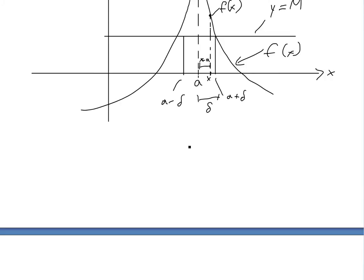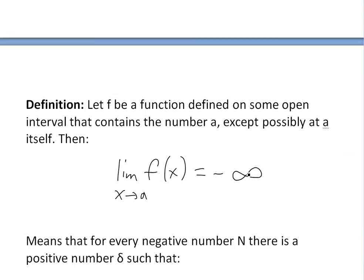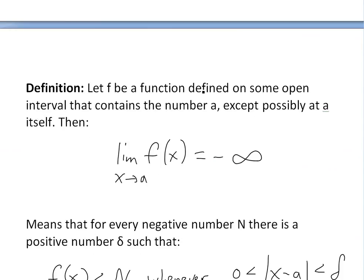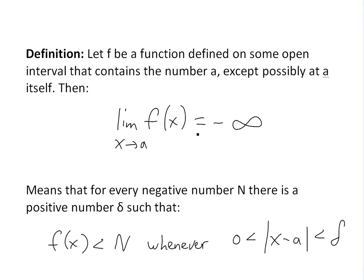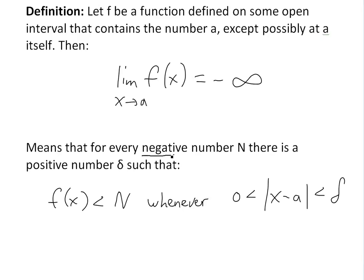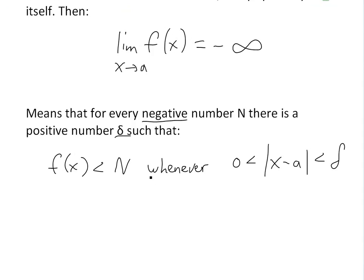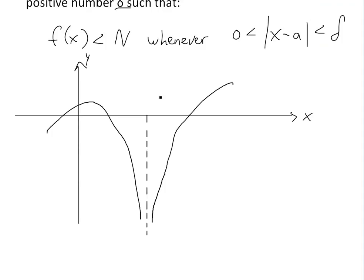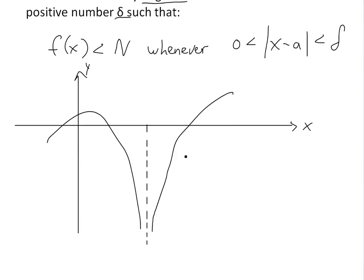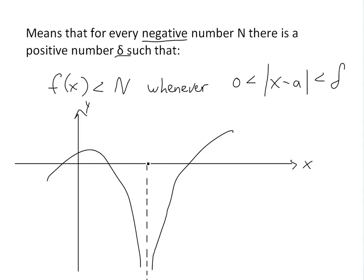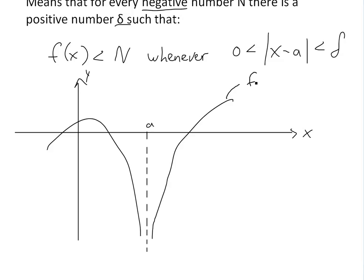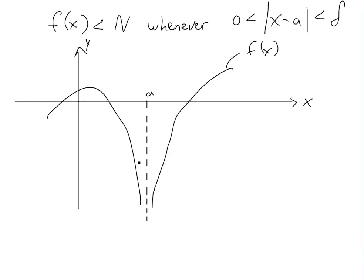That was the positive infinite limit. Now let's look at the negative one — it's going to be the exact same except we're dealing with negative infinity. Let f be a function defined on some open interval containing a except possibly at a itself. Then the limit as x approaches a of f(x) equals negative infinity means that for every negative number N, there is a positive number delta such that f(x) < N whenever 0 < |x − a| < delta. Here's a graphical illustration — the same as above but now the function is going downward with a vertical asymptote at a.